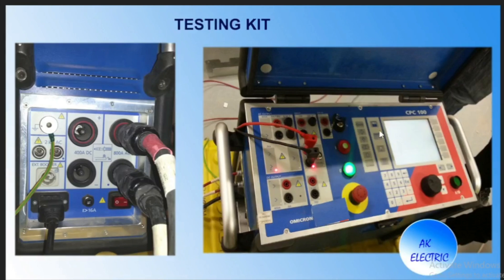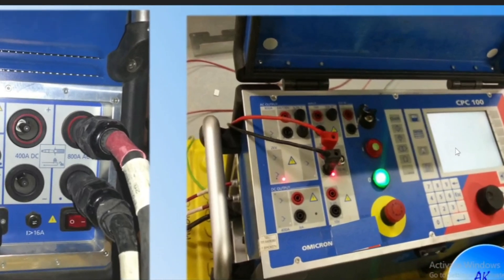This is another testing kit used for MCB trip test called CPC100. Here up to 800 ampere AC you can inject for MCB — these two cables should be connected to the MCB poles. Using the quick option, the MCB trip test main page will open where you can select whatever current you want to inject — whether 100, 200, or 300 ampere. After selecting, press start; the MCB will trip according to its trip characteristics and you will get the injected current value and trip time displayed. This is also a good testing kit for MCB trip test.